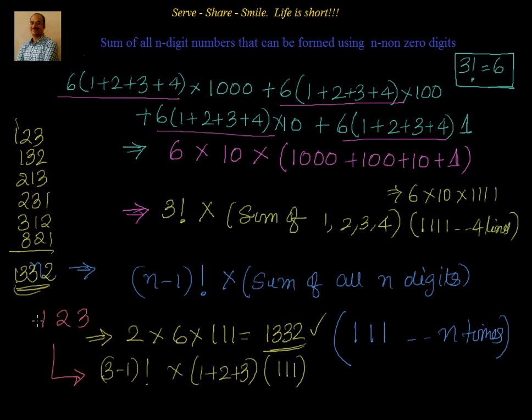You can cross-check this because 1, 2, 3 is very simple. The formula to remember works only when there are no zeros in the digits and the digits are not repeated. So if somebody gives you 3, 4, 5, 6, 7 — 5 numbers — and asks you to find the sum, let's look at that one.